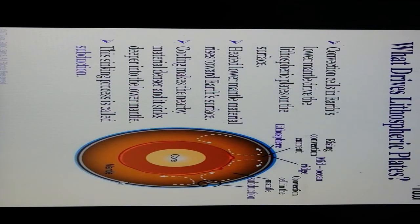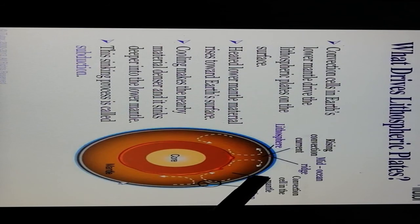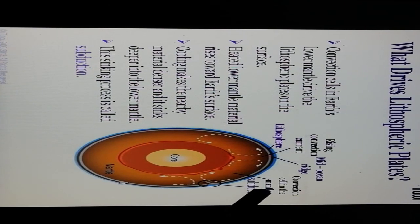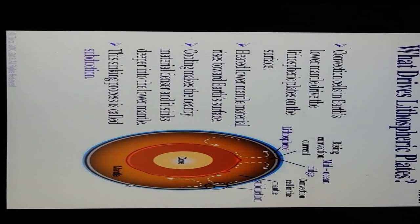What drives lithospheric plates? The rising theory is convection currents in the mantle, near the mid-oceanic ridges. Convection cells in the Earth's lower mantle drive the lithospheric plates on the surface. Heated lower mantle material rises toward the Earth's surface. Cooling makes nearby material denser and it sinks deeper into the lower mantle. This sinking process is called subduction.